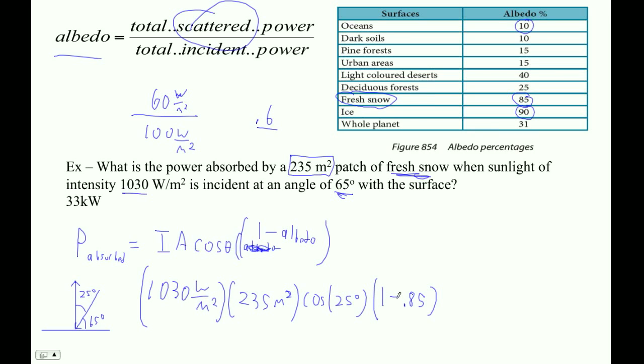So let's just see what it does here. 1,030 times 235 times cosine of 25 times parentheses 1 minus 0.85. I'm way too sophisticated to just type 0.15 in there. And I'm getting 32,905 watts is absorbed, because watts per square meter times square meters is watts. And I guess that's about 33 kilowatts.